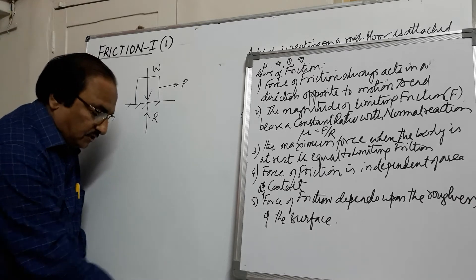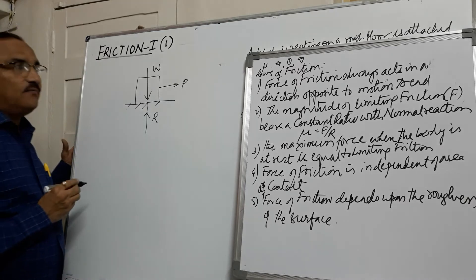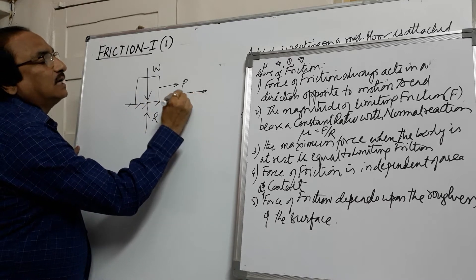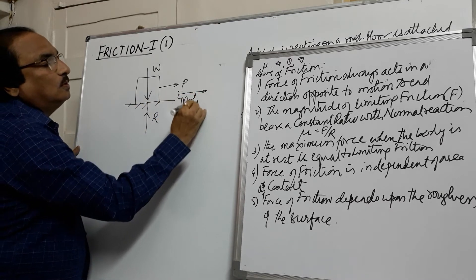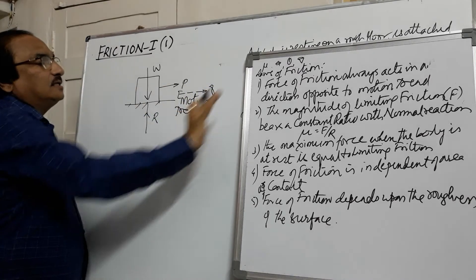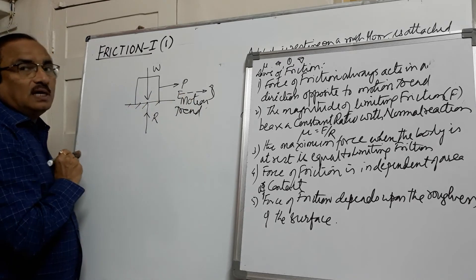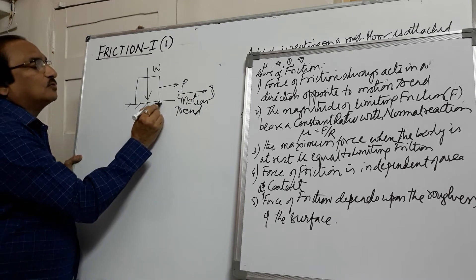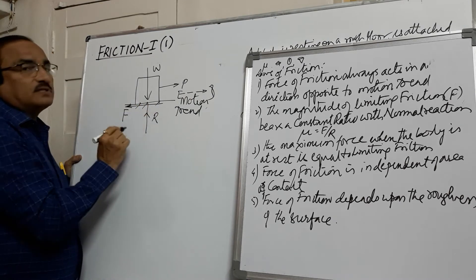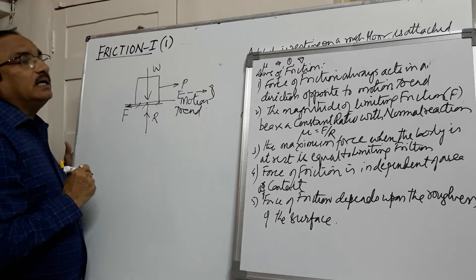This force of friction always acts in a direction opposite to the force or the motion trend. The body has tendency to move towards right, so the force of friction should always be opposite to the direction of motion. The force of friction acts at the surface of contact in the opposite direction, and these forces keep the body in equilibrium.